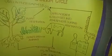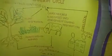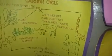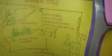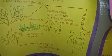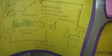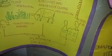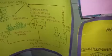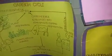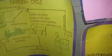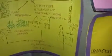Next is the carbon cycle — how carbon dioxide is utilized by plants for photosynthesis, how animals obtain carbon by eating plants, and how both dead plants and animals return carbon to the soil through decomposition. Carbon dioxide is also released from industries and through combustion into the atmosphere.